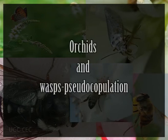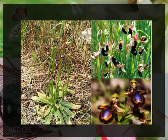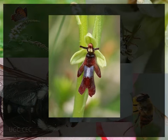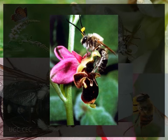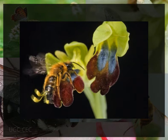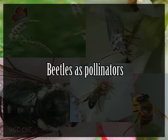A particularly dramatic example of adaptation for pollination is seen in some species of orchids, whose flowers resemble in shape, odor, and color the female of certain species of wasps, bees, or flies. The male insect is stimulated to attempt to copulate with the flower and becomes covered with pollen in the process. When he later attempts to copulate with another flower, some of the pollen from the first flower is deposited on the second. So complete is the deception that sperm have actually been found inside the orchid flowers after a visit by the male insect.